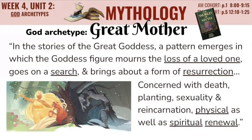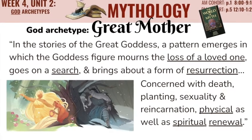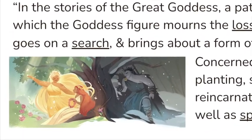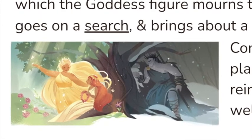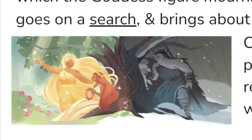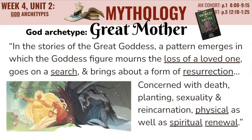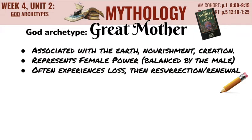In the stories of the Great Mother, a pattern emerges in which this figure mourns the loss of a loved one, goes on a search, and brings about some form of resurrection. One easy example is the story of Demeter and her daughter Persephone. Persephone goes down into the world of Hades, and during that time Demeter — this goddess associated with the earth — stops allowing plants to grow, and so we have winter. When her daughter returns, those plants grow again and we have spring and summer. These stories are concerned with death, but also with planting, sexuality, and reincarnation — both physical and spiritual renewals. The Great Mother is associated with earth, nourishment, and creation; she represents female power and often experiences loss, but then resurrection and renewal.